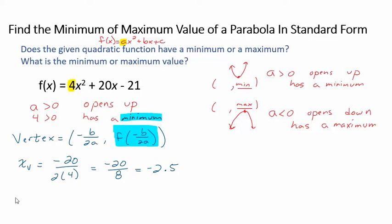All right, so now to find the y value of the vertex we simply plug in negative 2 and a half into our function and that would give me 4 times negative 2 and a half squared plus 20 times negative 2 and a half take away 21. All right, let's get out the calculator and see what this is. We get negative 46.